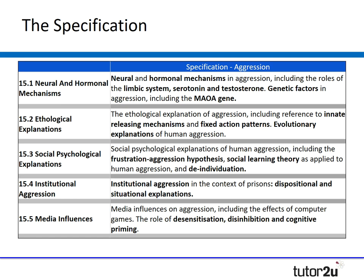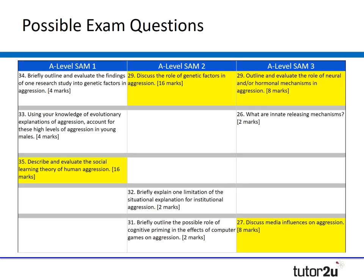You've got institutional aggression, looking at dispositional and situational explanations, and then media influences with three key terms: desensitisation, disinhibition, and cognitive priming. That's a brief overview — I'm sure you're aware of that already, but it's useful to have it on one slide.